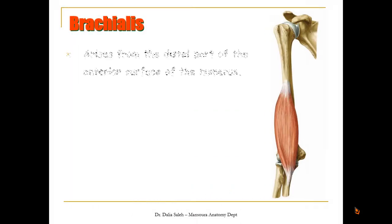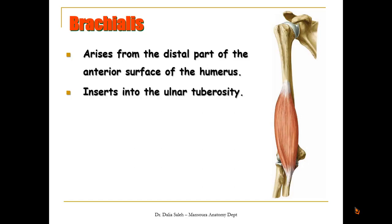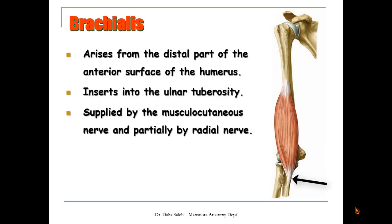The brachialis muscle is a deep muscle which lies deep to the biceps. It arises from the distal part of the anterior surface of the humerus and inserts into the ulnar tuberosity. It is also supplied by the musculocutaneous nerve and partially by the radial nerve at its lateral side, and it is a powerful flexor of the elbow joint.